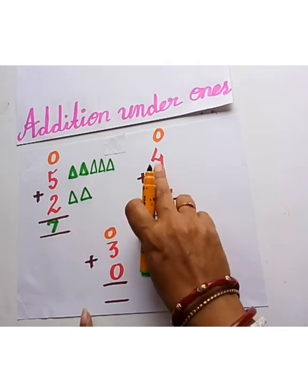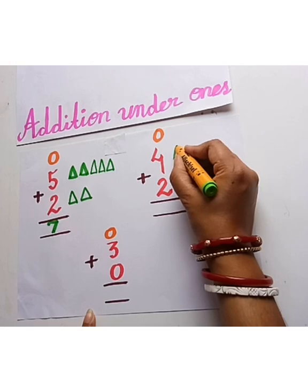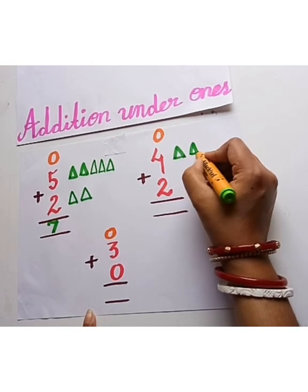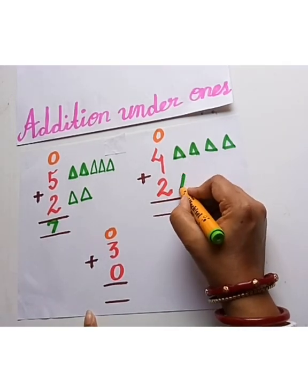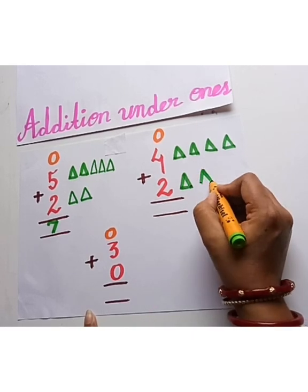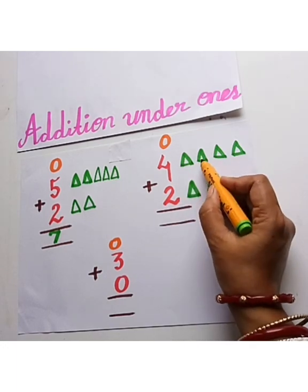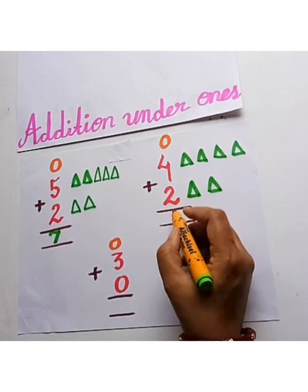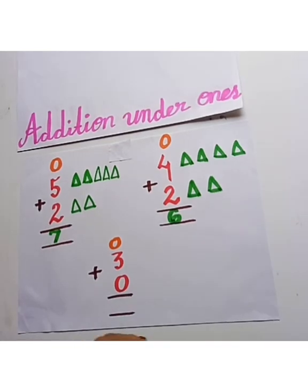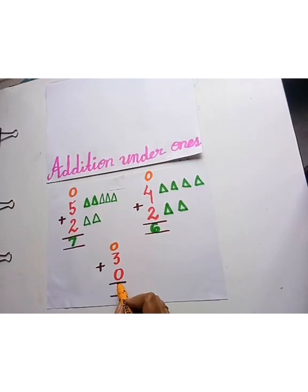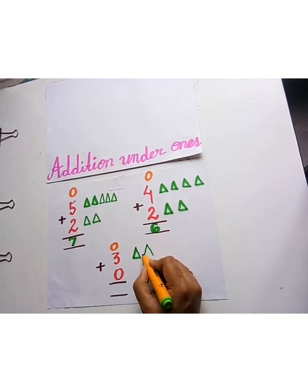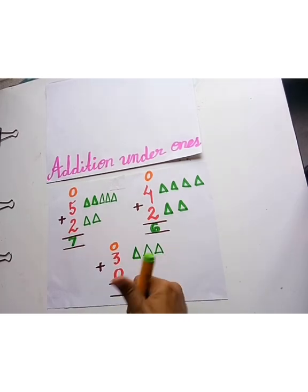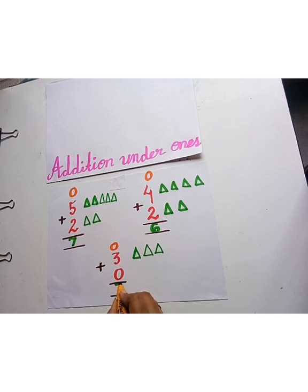Let's see another one: 4, so let's draw 4 triangles — 1, 2, 3, 4 — and then 3 more triangles — 1, 2, 3. Now 0 means nothing, so we will not draw any triangle here. Let's count: 1, 2, 3. So the answer will be 3.